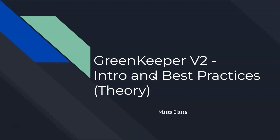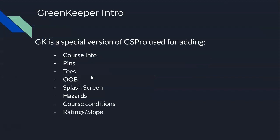In these videos we're going to be talking about intro and best practices for Greenkeeper. What is Greenkeeper? Well, in theory it's really a special version of GS Pro, kind of stripped down, and it's used to add very specific things to your course — specifically your Unity build file — that allows us to add golf-specific attributes, conditions, and things like that to our course.